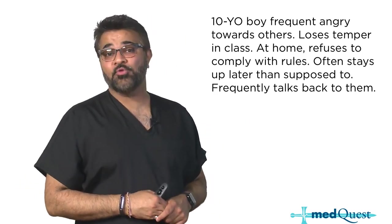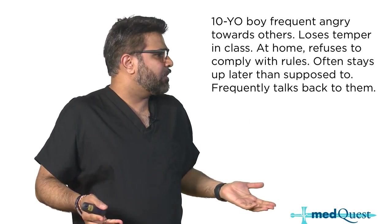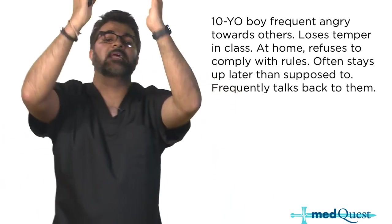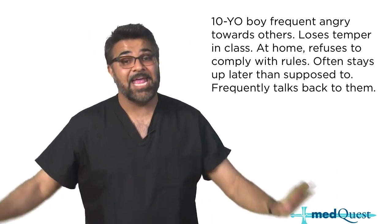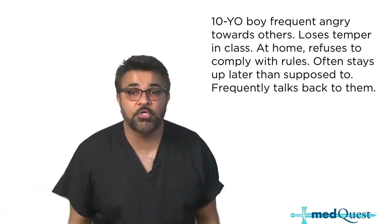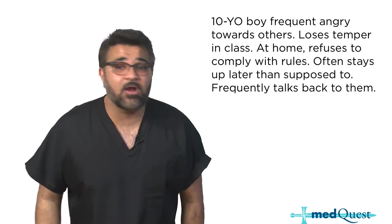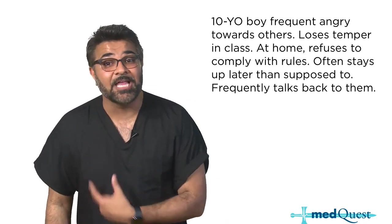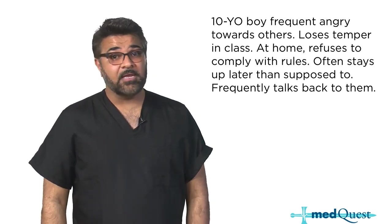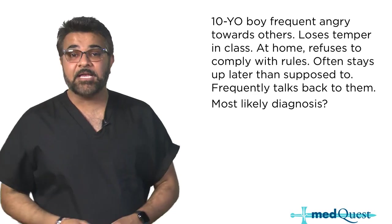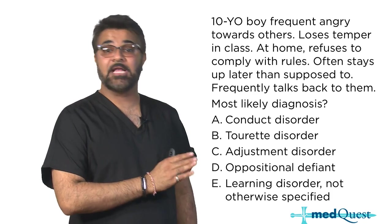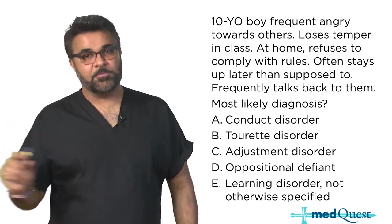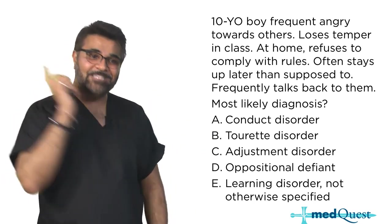A 10-year-old boy with frequent anger towards others, losing his temper in class, refusing to comply with rules at home, often staying up later than allowed, and frequently talking back - what's the most likely diagnosis? Is it conduct disorder, Tourette's, adjustment disorder, oppositional defiant disorder, or learning disorder? There's persistent anger and it's oppositional - the answer is oppositional defiant disorder.